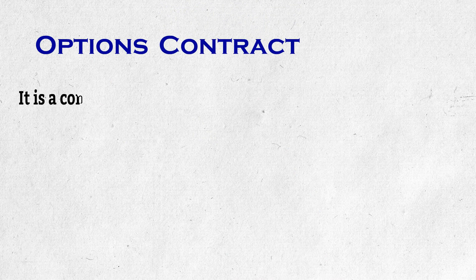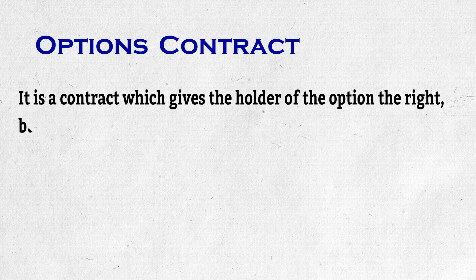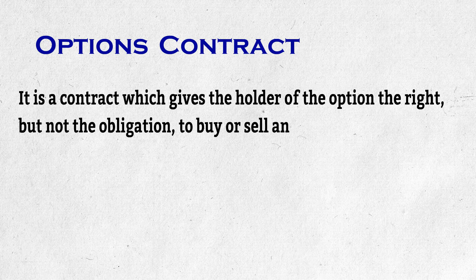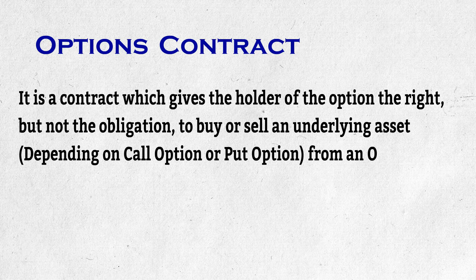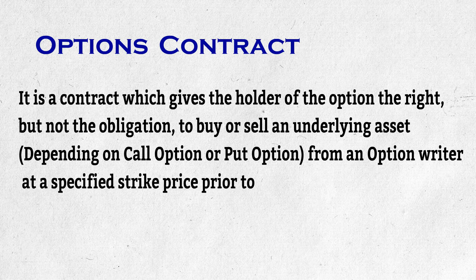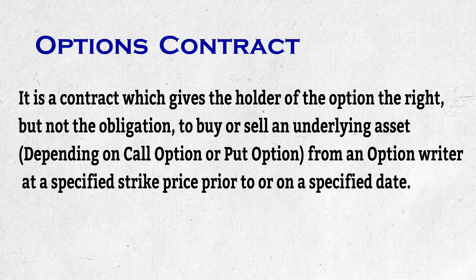Options or Options Contract — let us define it first. It is a contract which gives the holder of the option the right but not the obligation to buy or sell an underlying asset from an option writer at a specified strike price prior to or on a specified date. The call or put option depends on whether the option holder wants to buy or sell the underlying asset.